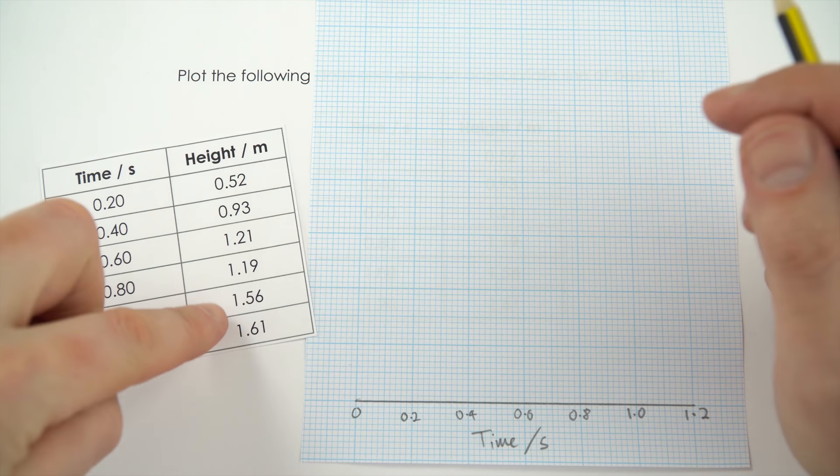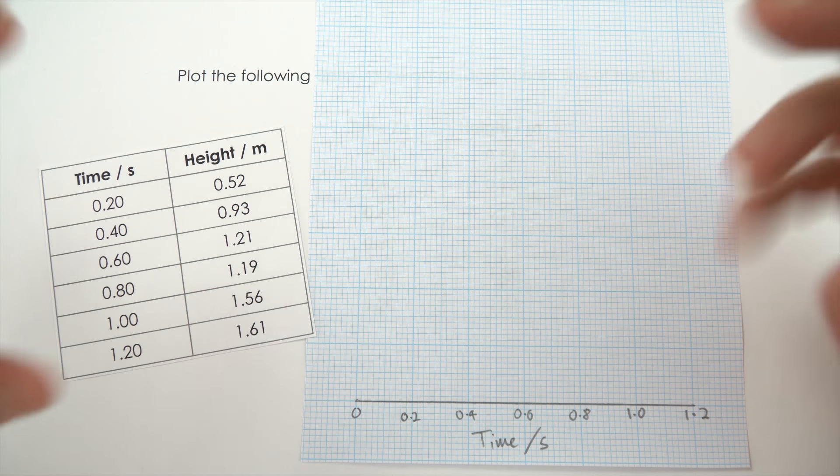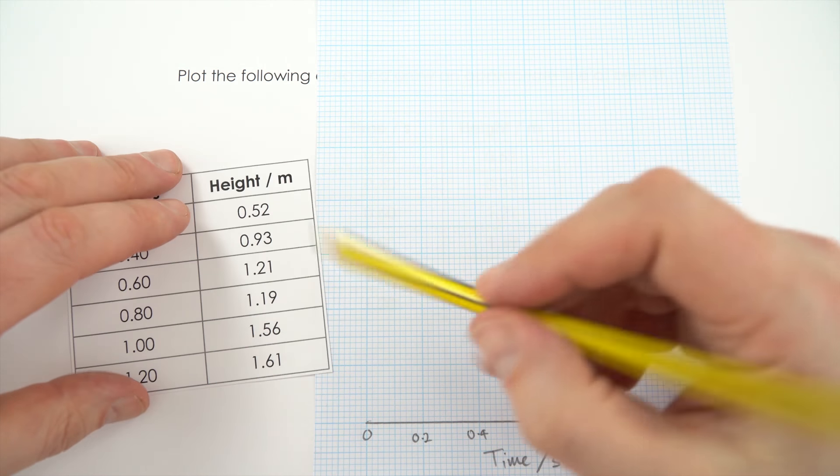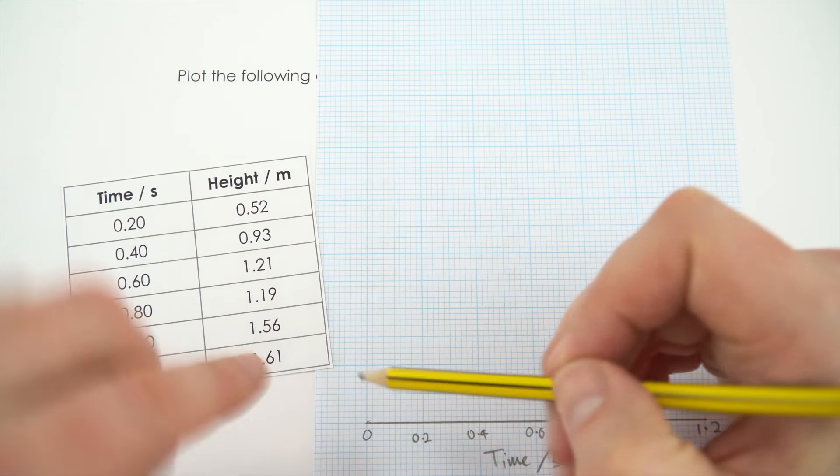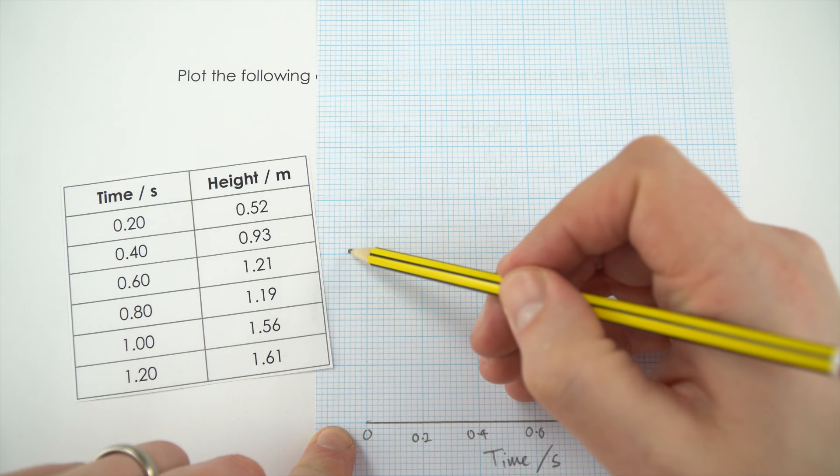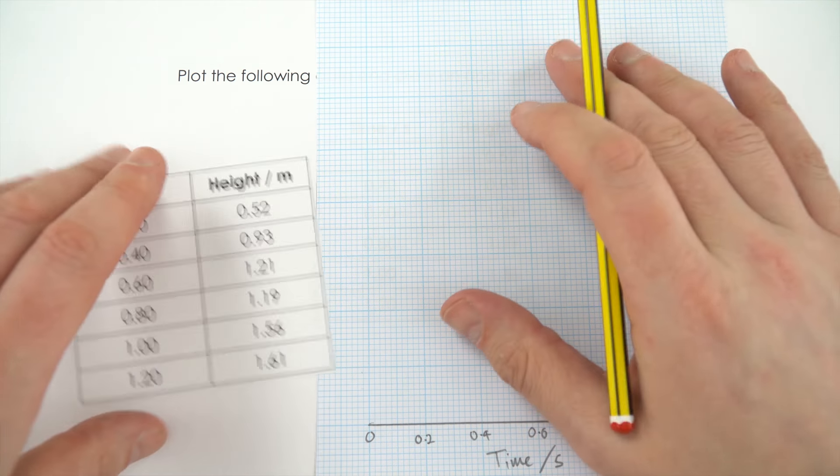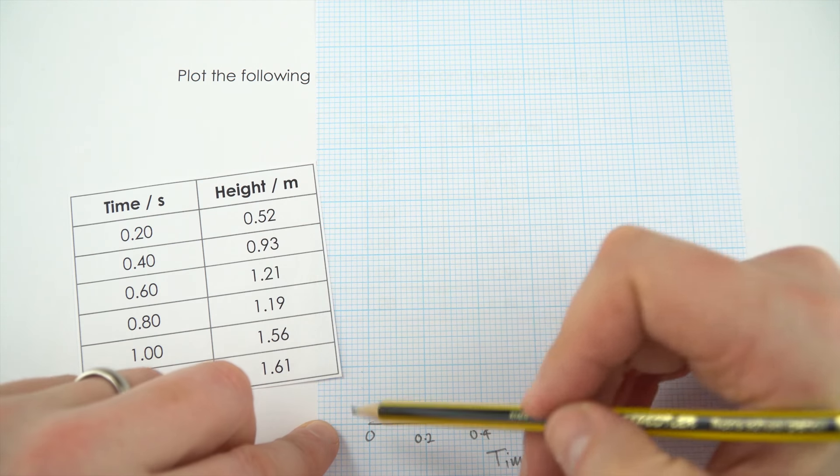Now going up the y-axis, we go up to 1.6 and we start at 0.5. Now this is where it's your decision. You don't always have to start at 0, so we could start labelling at 0.5, 0.6, 0.7, 0.8 and so on. For this one here though, I want to see what happens if we maybe take the line back to the origin.